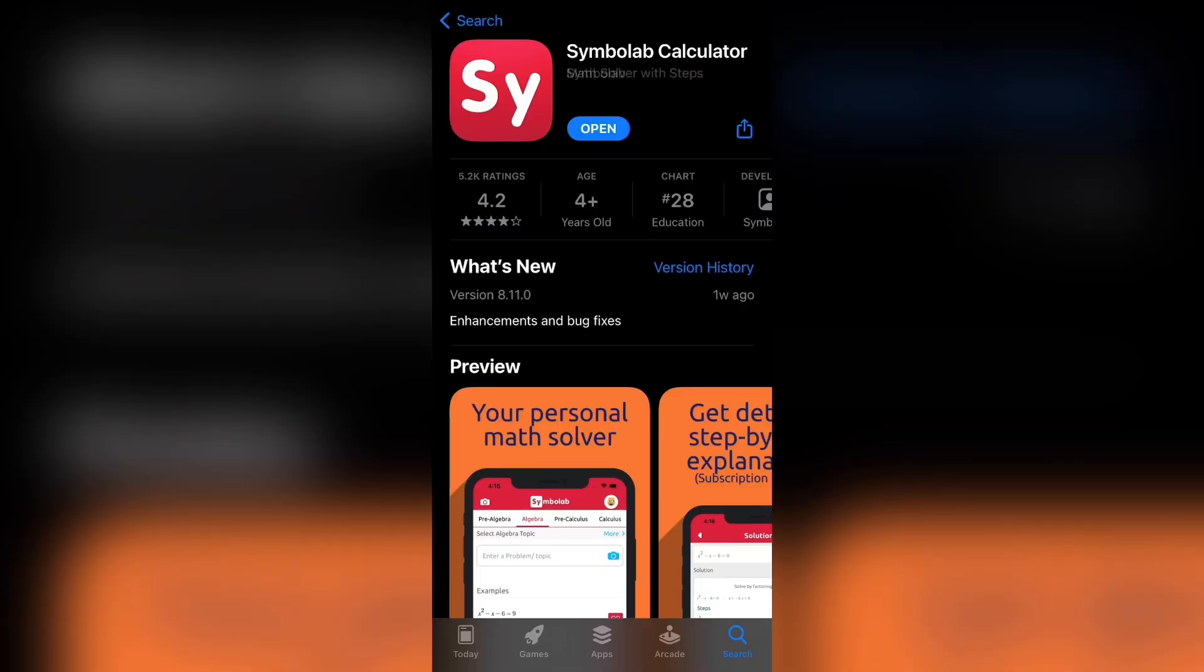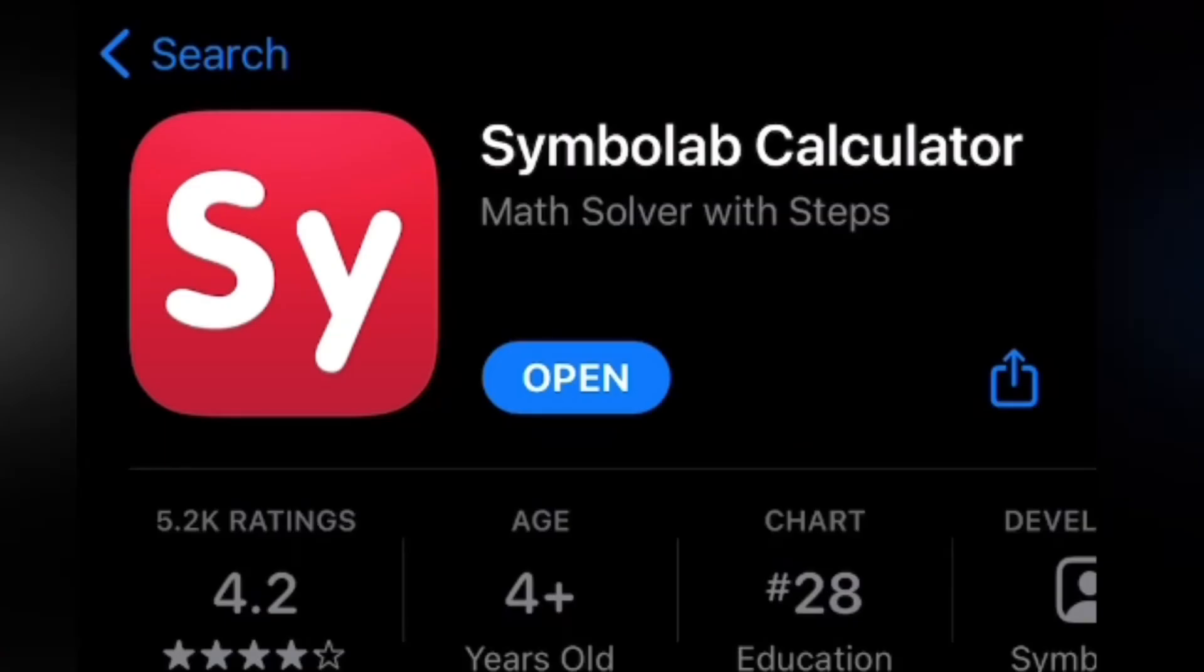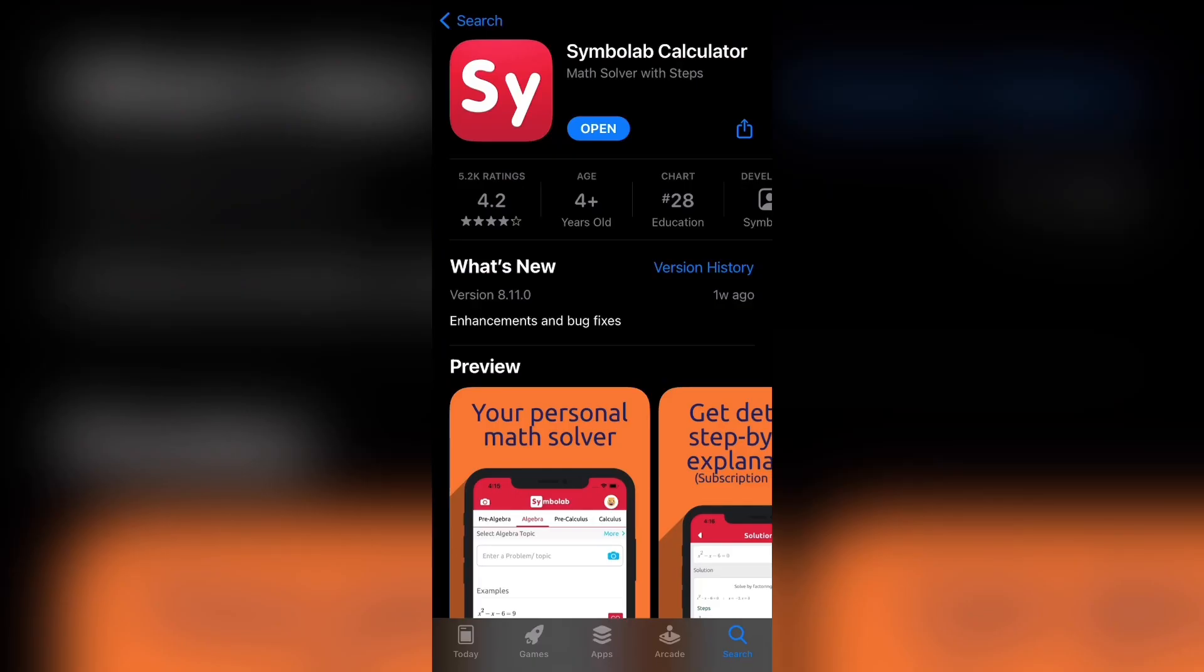Now the Symbolab app looks just like this. It is called the Symbolab Calculator. I'll leave the download link in my description below. So go ahead and check that out if you do want to install it quickly. There is also a website to this app. So if you are on a browser or are on your laptop, then you can go ahead and check my description. The link to the website will be over there.